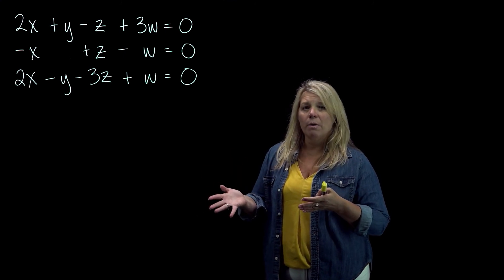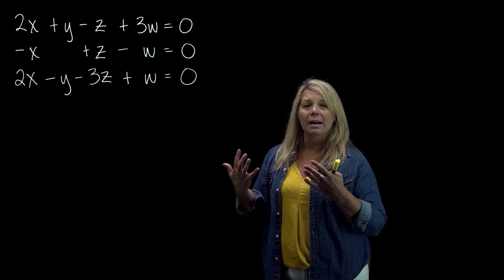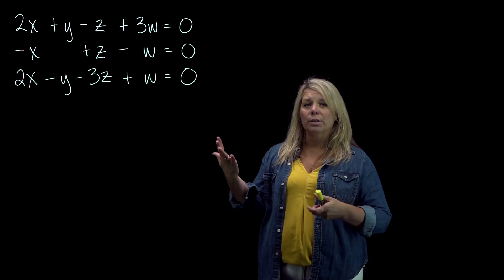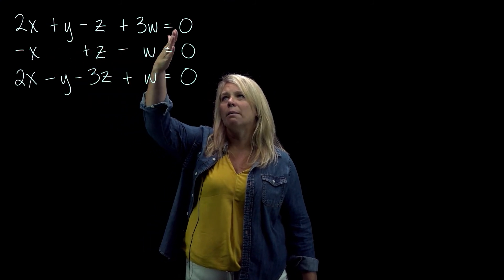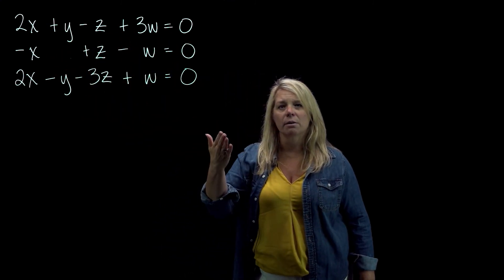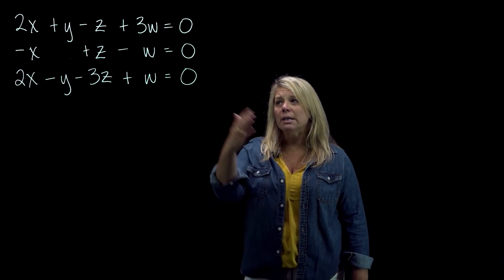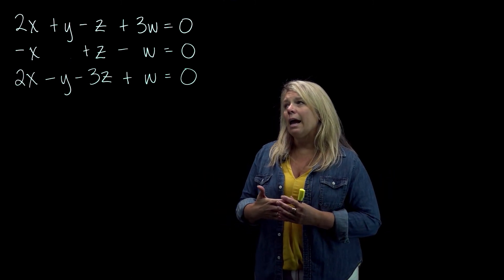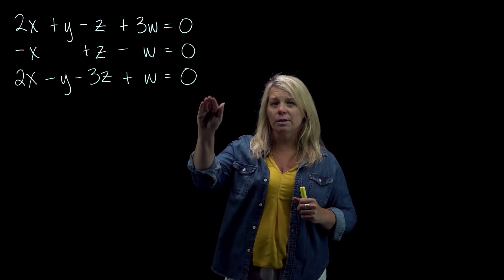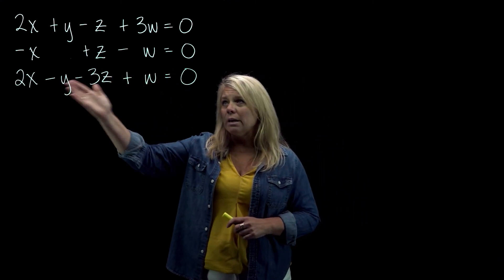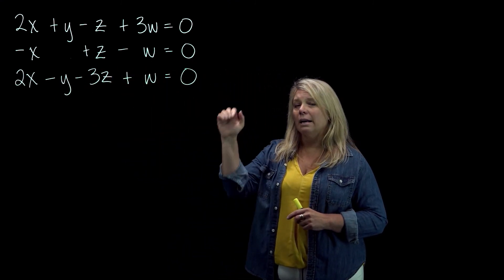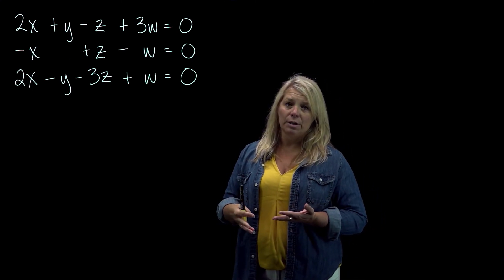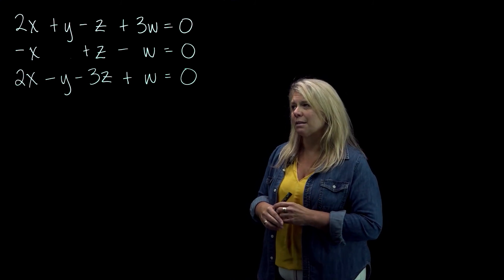When you have a homogeneous system of equations, one important thing is that all the variables being zero will always be a solution. When x, y, z, and w are all zero, that makes all of these equations true. So a homogeneous system will always have at least one solution. The question is, does it have more than one solution? With this being an underdetermined system and knowing we have at least one solution — all zeros — an underdetermined system should tell us to expect infinitely many solutions. So it would be a dependent system.